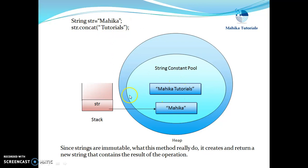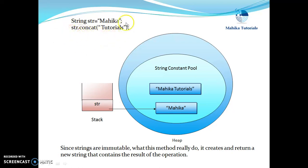Here we can see that str is referring to the "Micah" object. But when we say str.concat("tutorials"), this statement leads to the creation of a new object with the resultant value "Micah tutorials". However, str is still referring to "Micah", and that's the reason why if we try to print the value of str even after the concat method has been called, we get "Micah" as output.